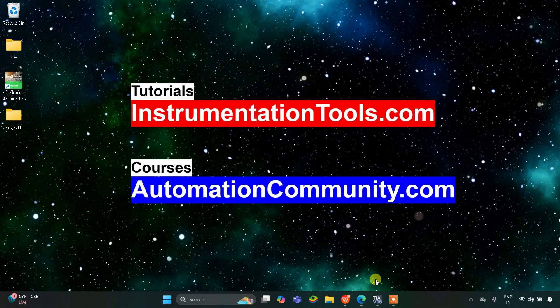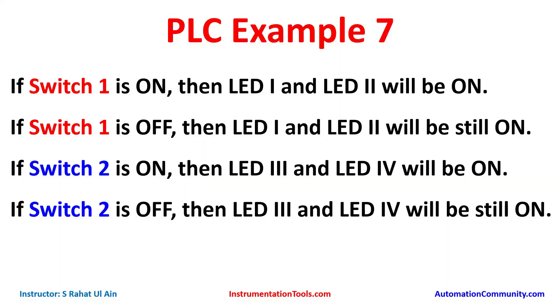Hello everyone, welcome to Automation Community. Today in this video we are going to discuss an example using set coils. Example 7: if Switch 1 is on, then LED 1 and LED 2 will be on. If Switch 1 is off, LED 1 and LED 2 will still be on. If Switch 2 is on, then LED 3 and LED 4 will be on. If Switch 2 is off, LED 3 and LED 4 will still be on.